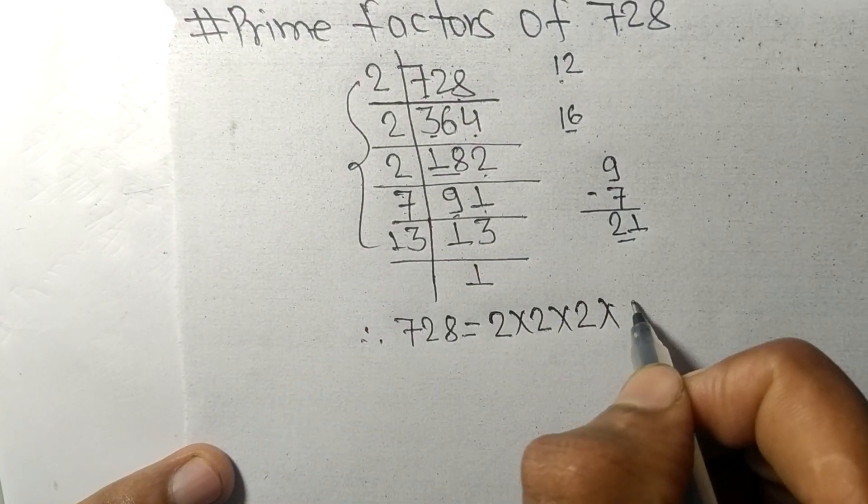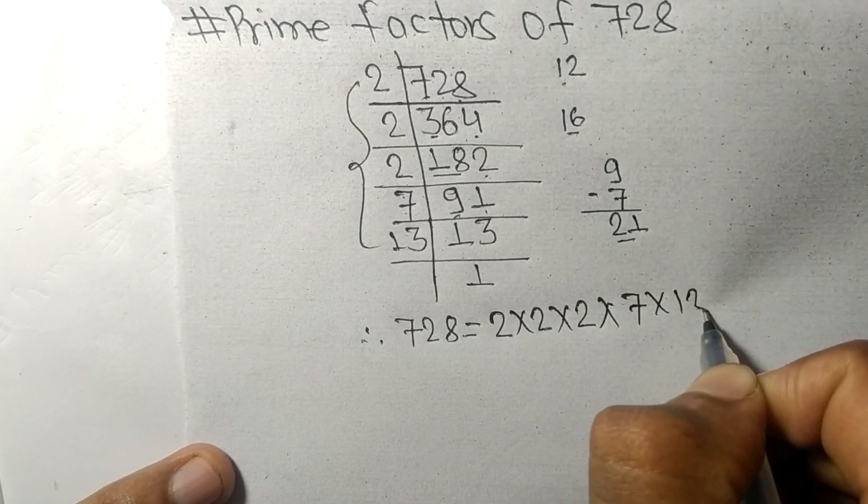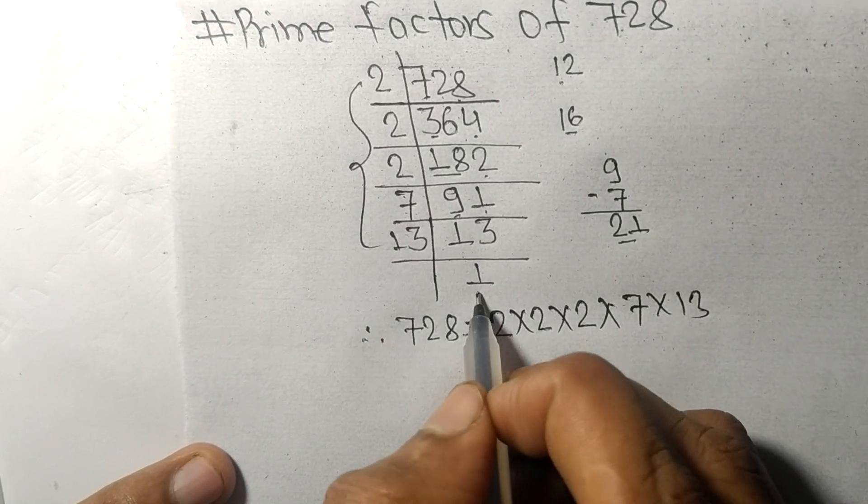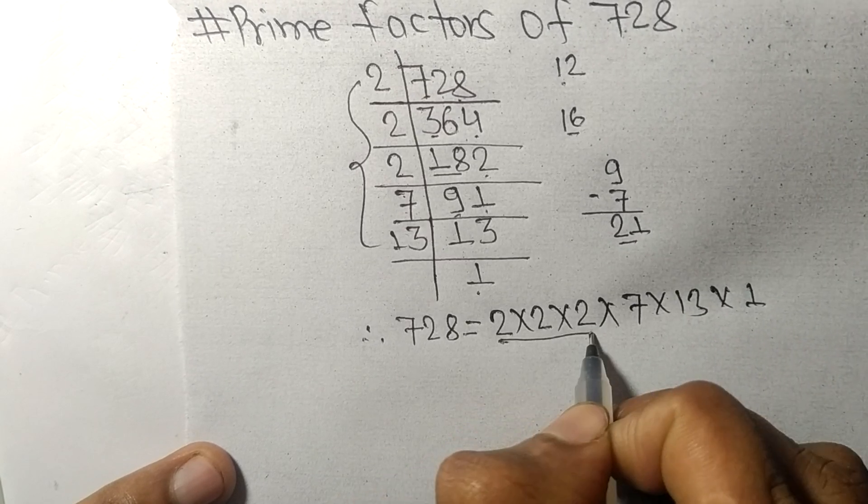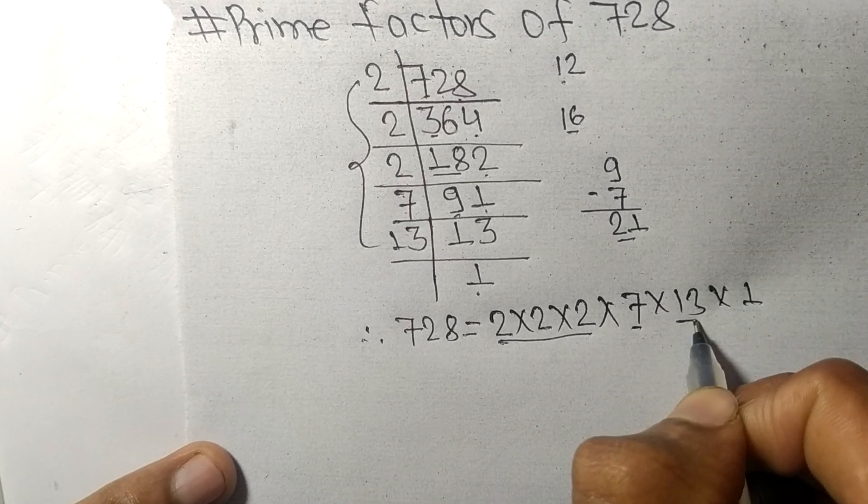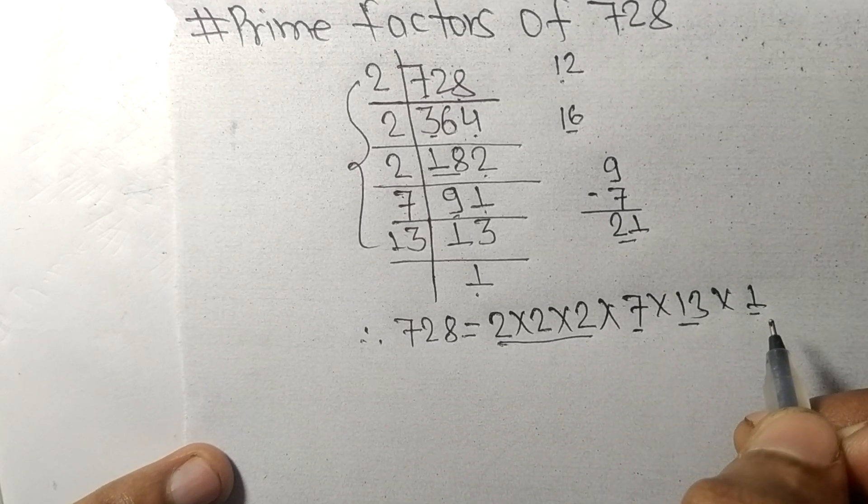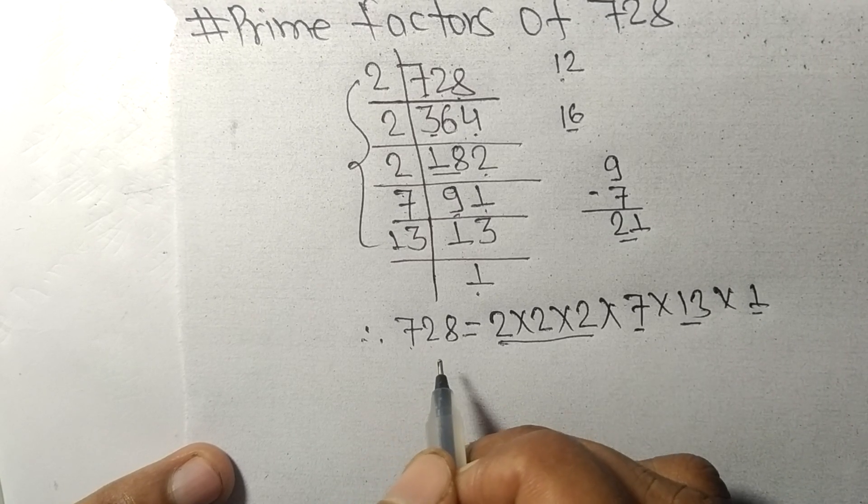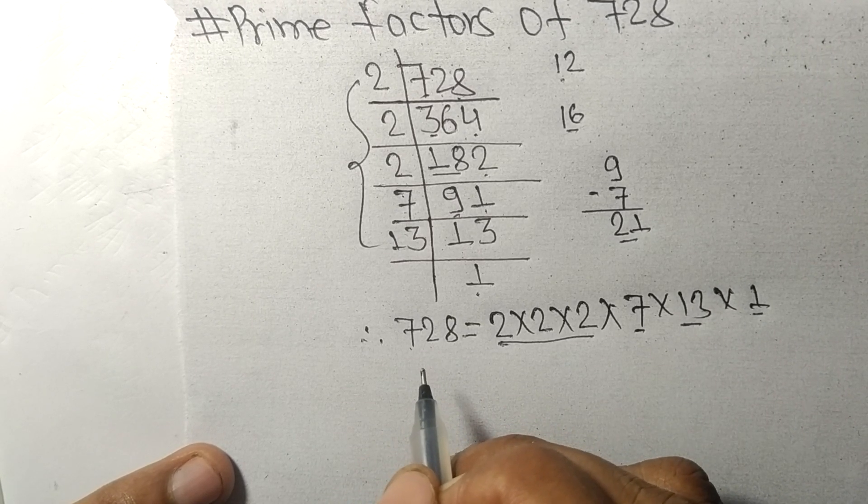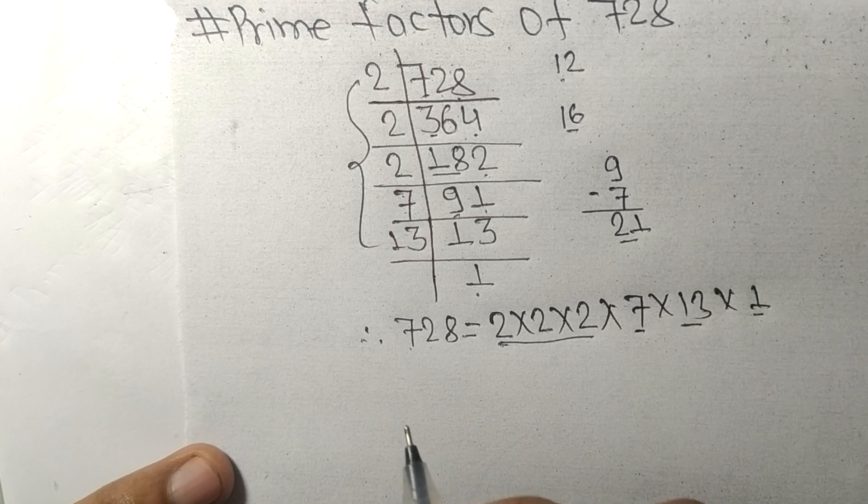And from here it is 7 and 13. From this side we get 1. So 2, 7, 13, and 1 are the prime factors of 728. So this much for today and thanks for watching.